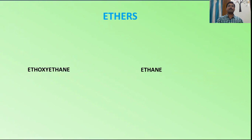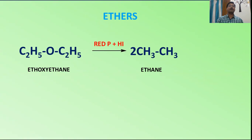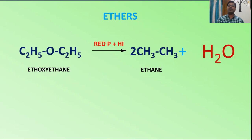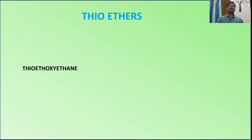For ethers — ethoxyethane, commonly called diethyl ether — when treated with red phosphorus and hydrogen iodide, because there are two ethyl groups, we get two molecules of ethane, and the oxygen converts into water. Four hydrogens are required in total: one for each ethyl group and two for the oxygen.